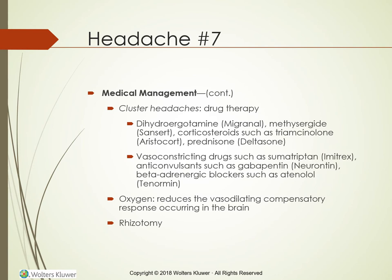Symptoms of cluster headaches are controlled with various drugs including ergotamine derivatives such as dihydroergotamine or methysergide. Some clients respond to corticosteroids such as Aristocort and prednisone, lithium carbonate, and vasoconstriciting drugs in the triptan group such as sumatriptan and zolmitriptan. Anticonvulsants such as gabapentin and Depakote, and beta-blockers such as atenolol and propranolol, may also be used. Inhaled or injected drugs may be preferred because they are absorbed more rapidly than those administered by the oral route.